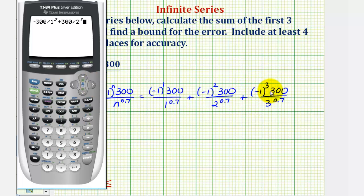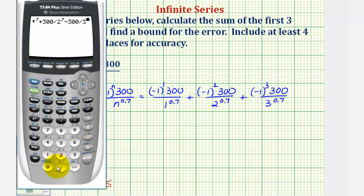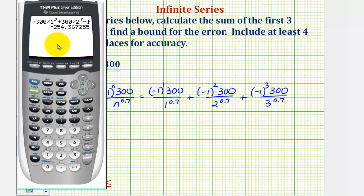The third term is negative, so minus 300 divided by three raised to the power of 0.7. So our approximate partial sum for the first three terms would be negative 254.3673.